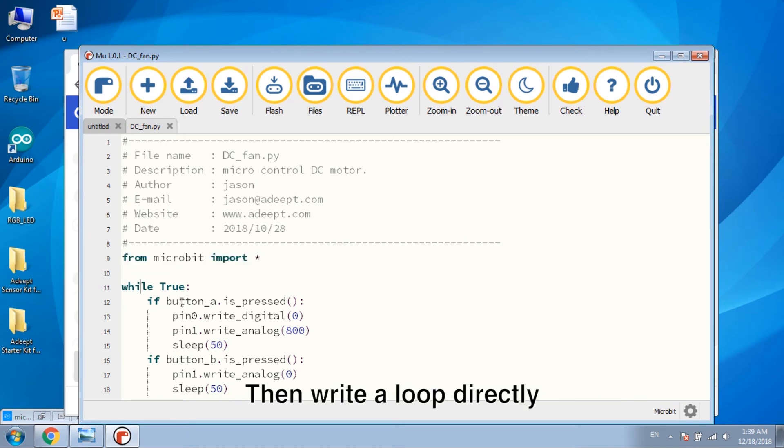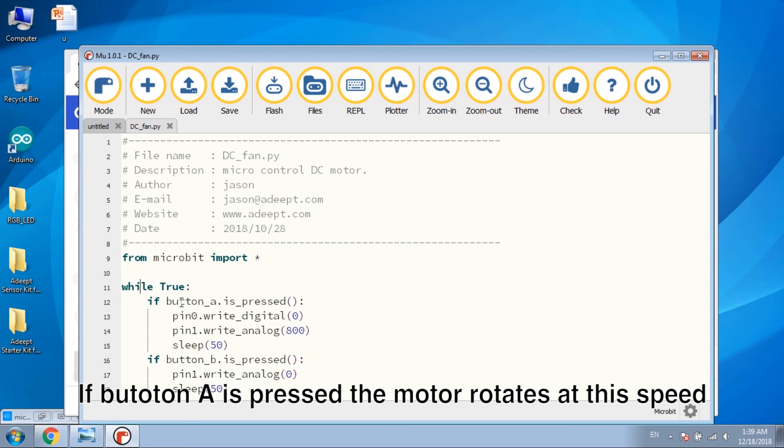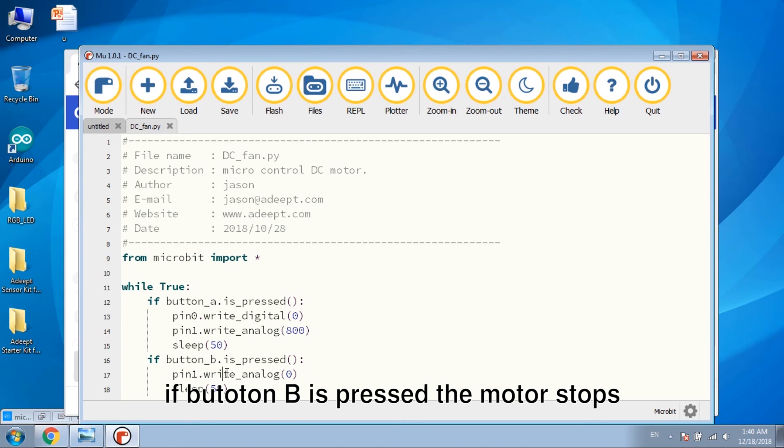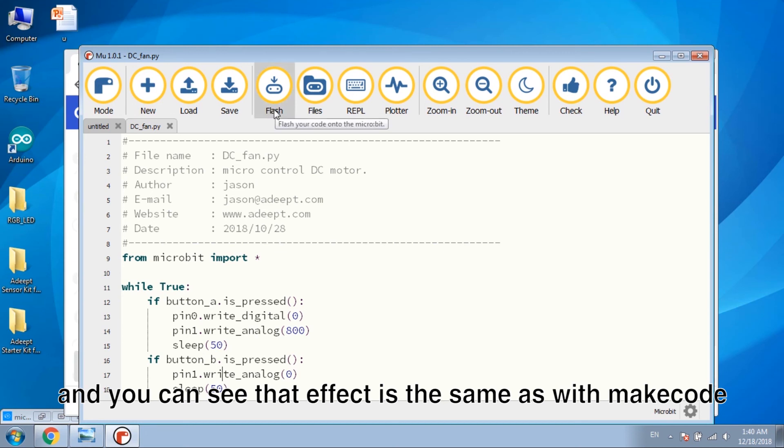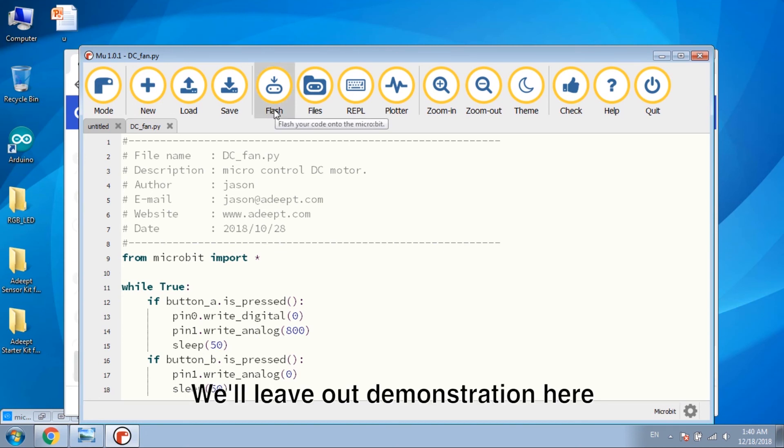Then write a loop directly. If button A is pressed, the motor rotates at this speed. If button B is pressed, the motor stops. Download the code and you can see that the effect is the same as with MakeCode. We will leave our demonstration here.